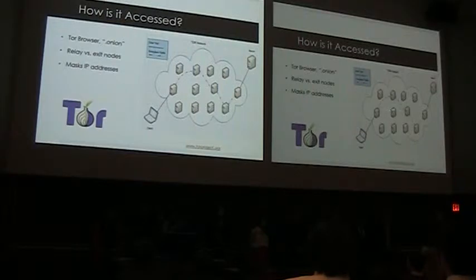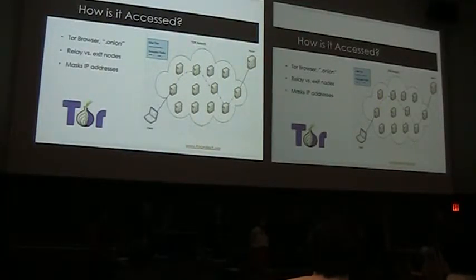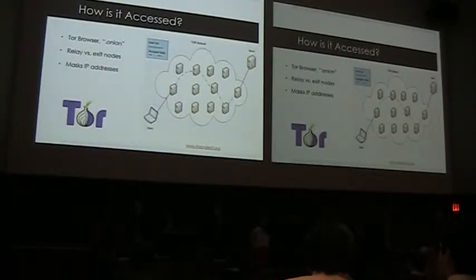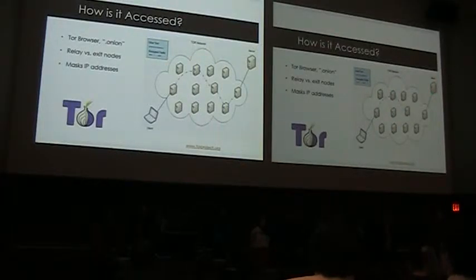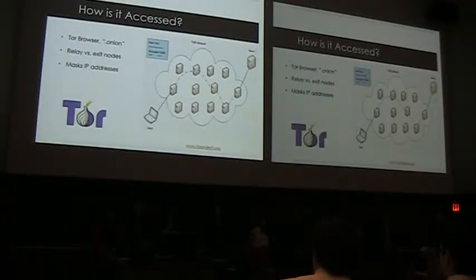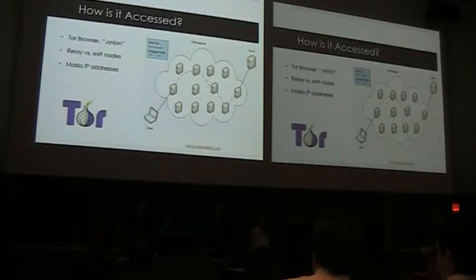The traffic goes through a cloud of sorts and bounces between several different relay nodes. Each relay node has a different IP address, and each one encrypts the traffic on its way. It then releases at the final exit node, which is the final IP address, masking the original IP address and providing a heightened sense of anonymity.